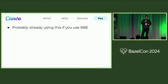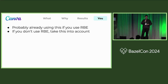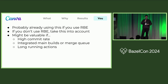If you're already using RBE, everyone implements this feature, so you're probably already using it. If you're not, this is something to consider when weighing whether to migrate — particularly if you have a high commit rate, you do integrated main branch builds or have a merge queue, and if you have long-running actions in the multiple-minutes range.